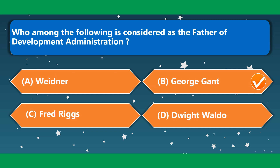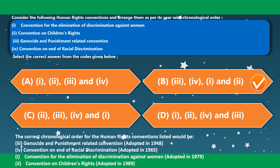Who among the following is considered as the father of development administration? Consider the following human rights conventions and arrange them in chronological order: first, the Genocide and Punishment related convention; then, Convention on Elimination of Racial Discrimination; Convention for the Elimination of Discrimination against Women; and Convention on Children's Rights. The correct option is option B.